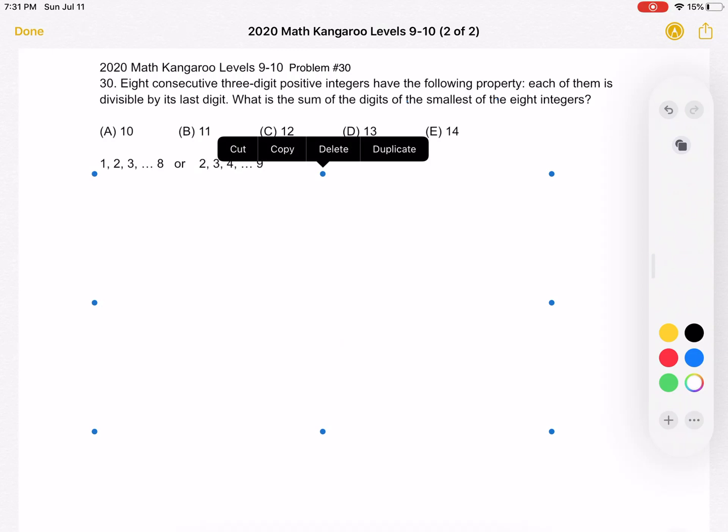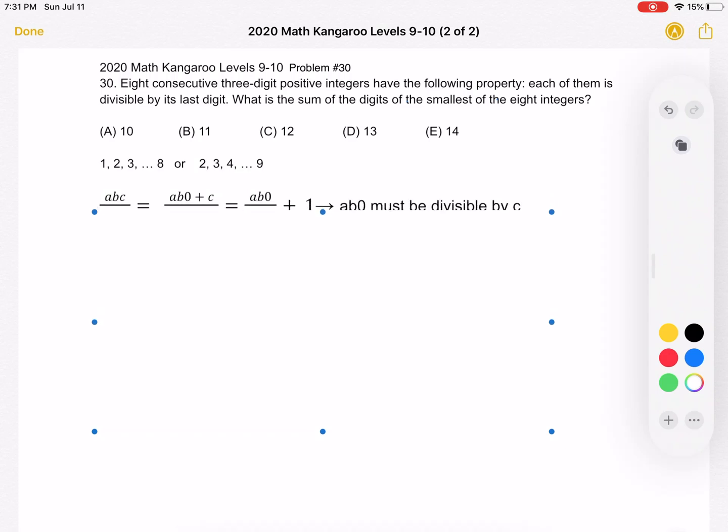What groups of eight consecutive numbers don't include zero? We can have from one to eight, or from two to nine as our last digit. Again, we're avoiding zero because we can't divide by zero.